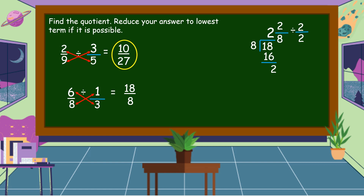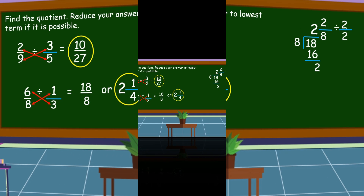So, i-divide na natin ang ating fraction. Sa final answer natin, kukopyahin muna natin ang ating whole number. Then, two divided by two, the answer is equal to one. Eight divided by two, the answer is equal to four. So, ang pinaka final answer natin ay two and one-fourth.